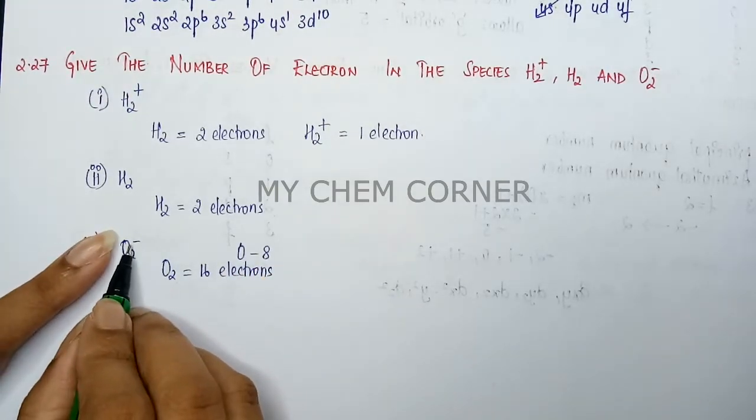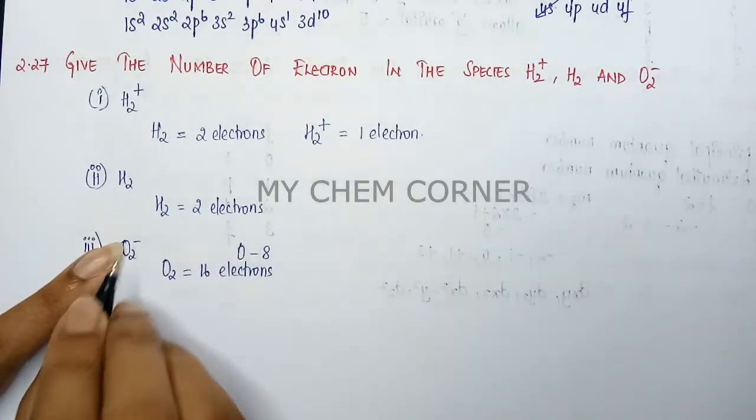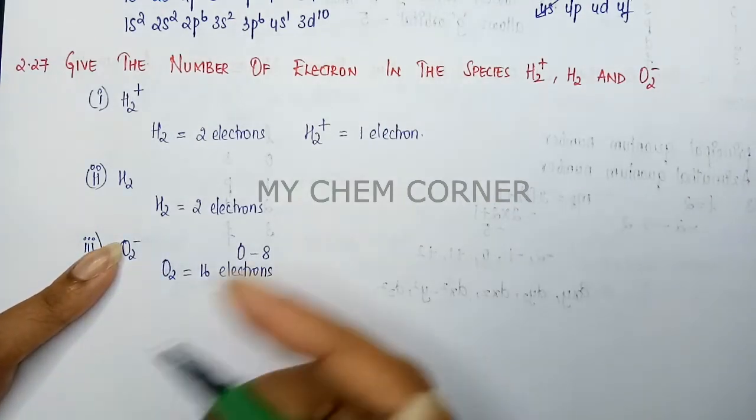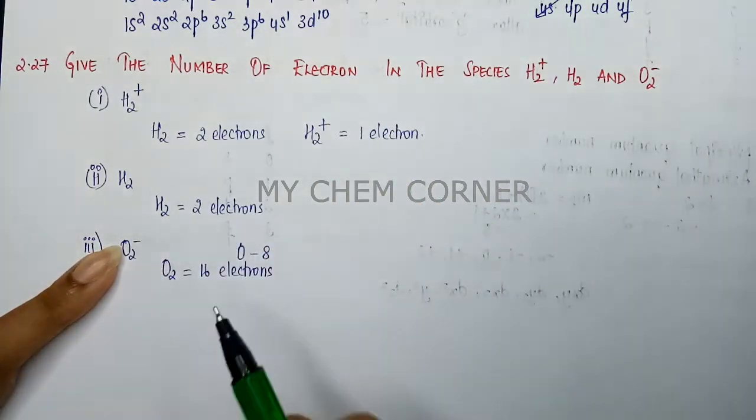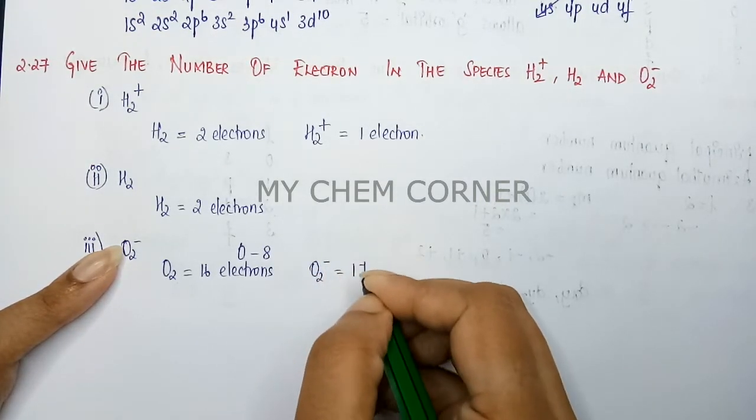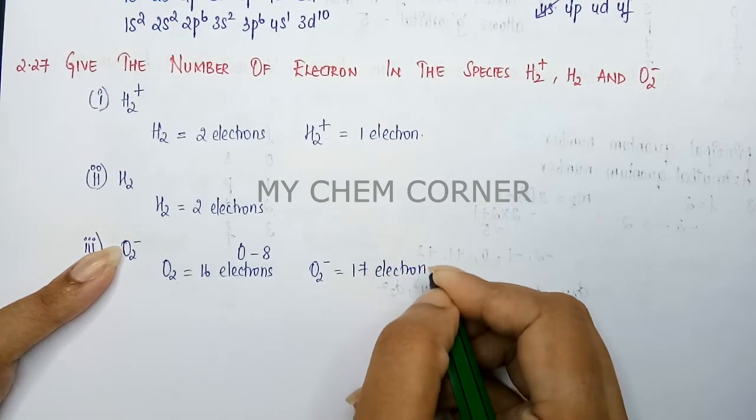But here they are asked for O2-, which means one minus charge. So that means one electron extra. Minus charge meaning the atom has gained electron. So for O2- I'm going to have 17 electrons.